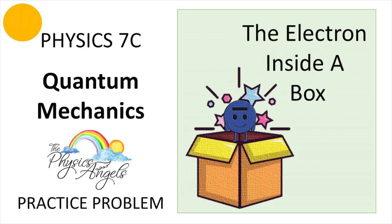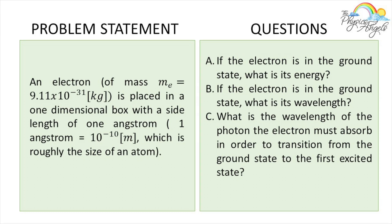So this is the problem we're going to be solving today: an electron is placed in a one-dimensional box with a side length of one angstrom. We have to figure out what is its energy, what is its wavelength, and what would be the wavelength of the photon the electron must absorb in order to transition from the ground state to the first excited state.